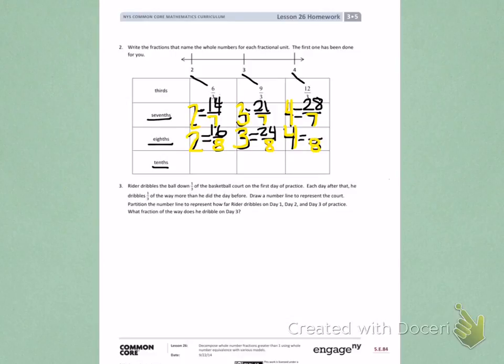Number 3. Ryder dribbles the ball down 1 third of the basketball court on the first day of practice. Each day after that, he dribbles 1 third of the way more than he did the day before. Draw a number line to represent the court. Partition the number line to represent how far Ryder dribbles on day 1, day 2, and day 3 of practice. What fraction of the way does he dribble on day 3?